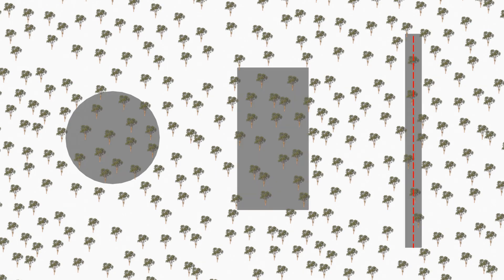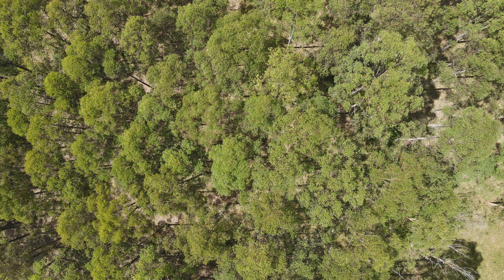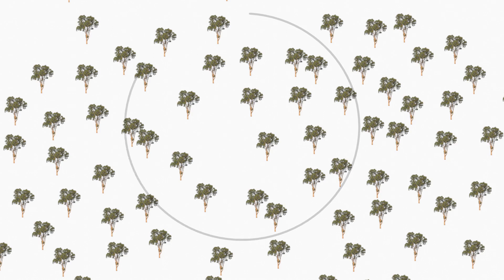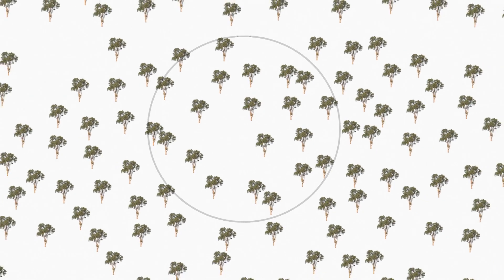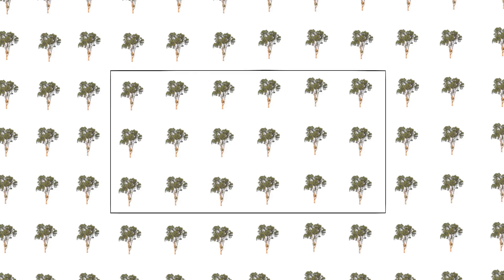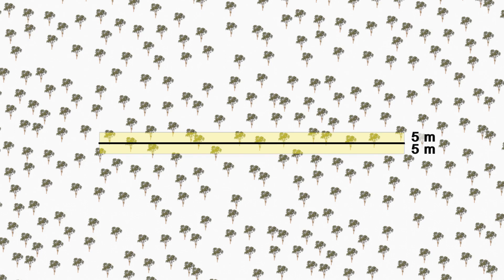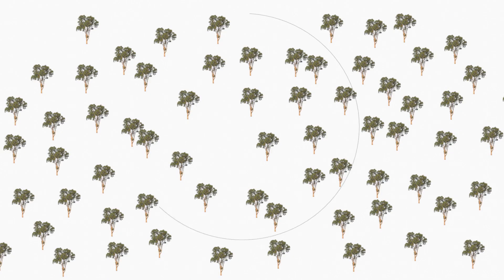There are three main types of plots commonly used in forest measurement: circular plots, rectangular plots, and strip plots or transects. Circular plots are suited to large areas of native vegetation and are easier to lay out in the field. A typical plot may be 1/20th of a hectare, equating to a circle with a radius of 12.62 metres. Rectangular plots are suited to plantations where trees are in clear rows or narrow plantings such as shelter belts. Strip plots are another option — for example, 5 metres either side of a central line, 100 metres long, giving a plot area of 1,000 square metres or 1/10th of a hectare. In this video, we will demonstrate circular plots.